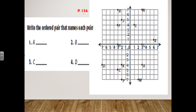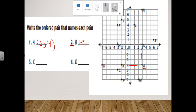Now open your book to page 156. The exercise asks us to write the ordered pairs for the points. For point A, x is three and y is four. For point B, x is negative three and y is seven.